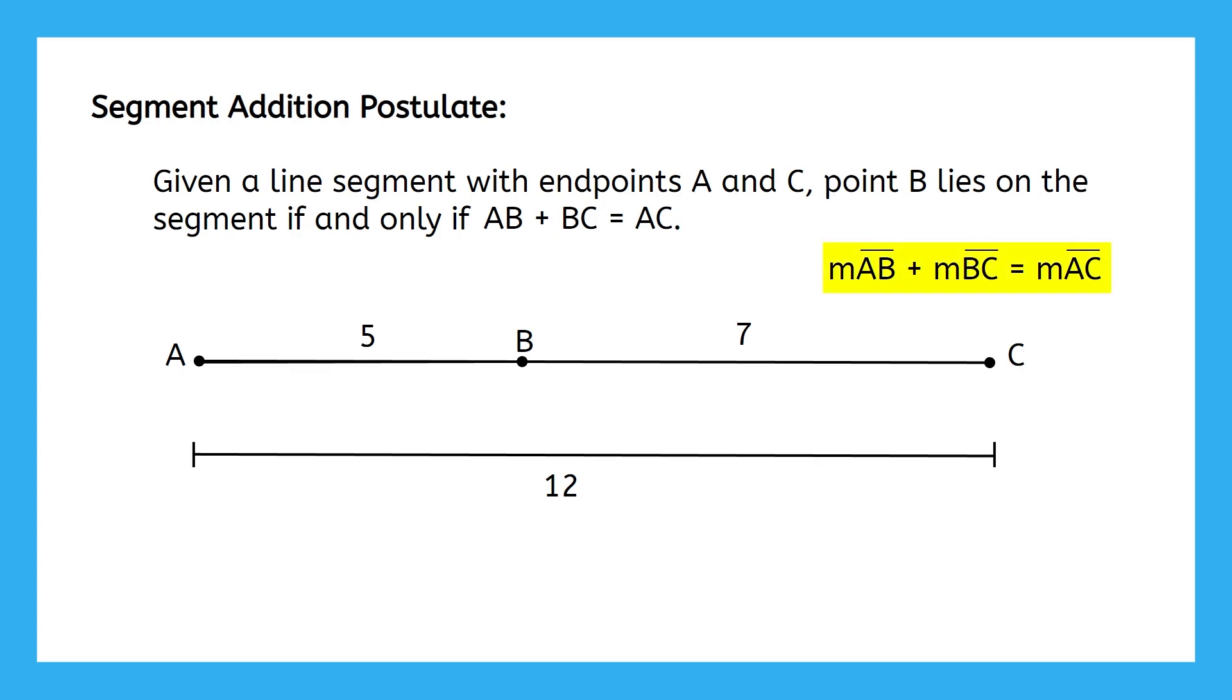This reads, the measure of segment AB plus the measure of segment BC equals the measure of segment AC. It's basically a math grammar thing, but we're going to write ours the shorter way. I just wanted to show you what this means so you'll know it if you ever see it. Oh, and one more thing. Our points don't have to be labeled A, B, and C. We can use any letters we want. Anyways, that's definitely enough background information. It's time to complete some examples.